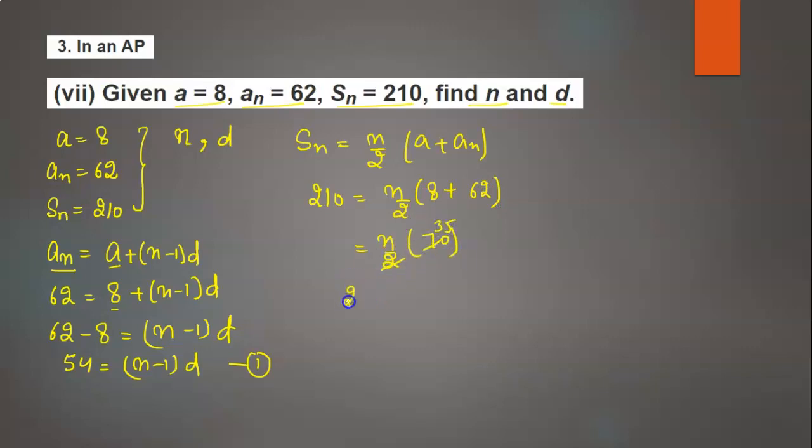Simplifying, 210 divided by 35 equals n. Calculating: 5 goes into 35 seven times, 5 times 20 is 100, 7 times 6 is 42. So n equals 6.